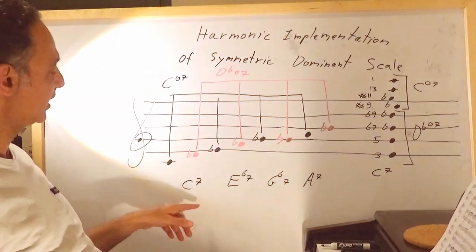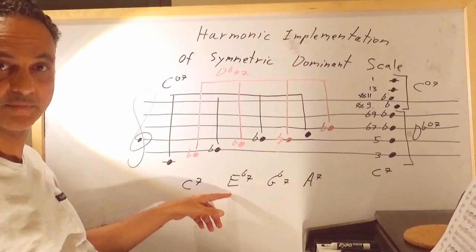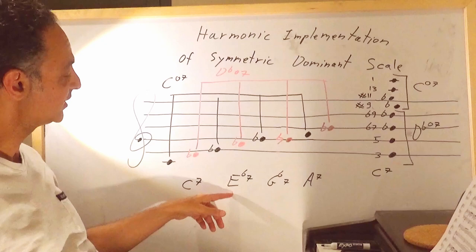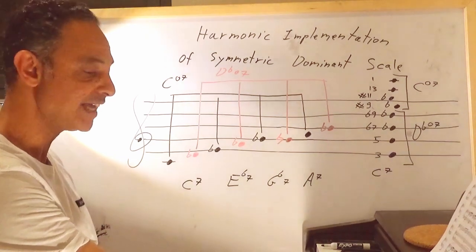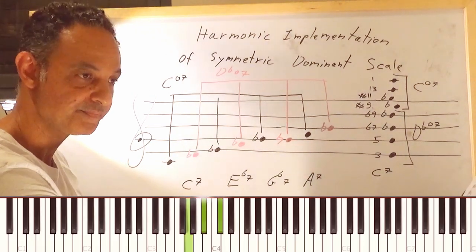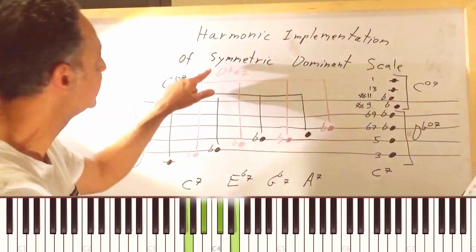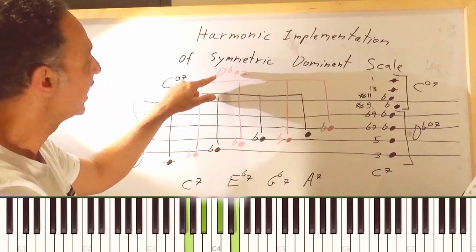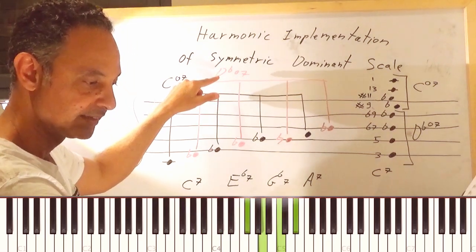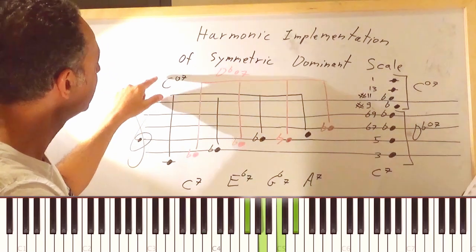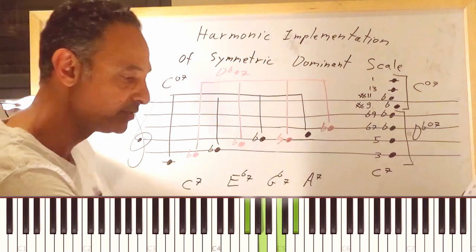Now let's go to the E flat seven chord and do the same thing. The third of E flat seven is G, so let's build a diminished seven chord up from G. We get the second inversion of the D flat diminished seven chord. On top of it I put the second inversion of the C diminished seven chord.